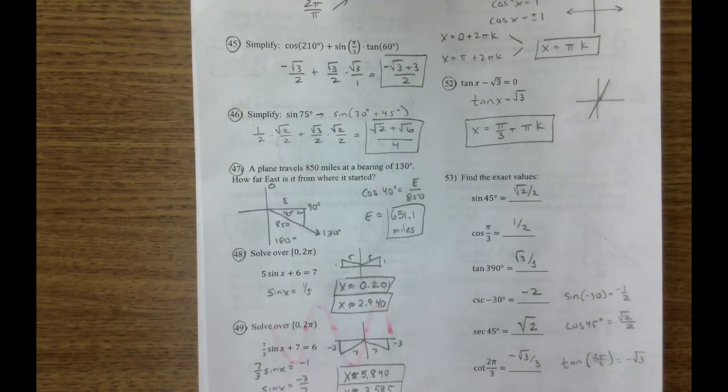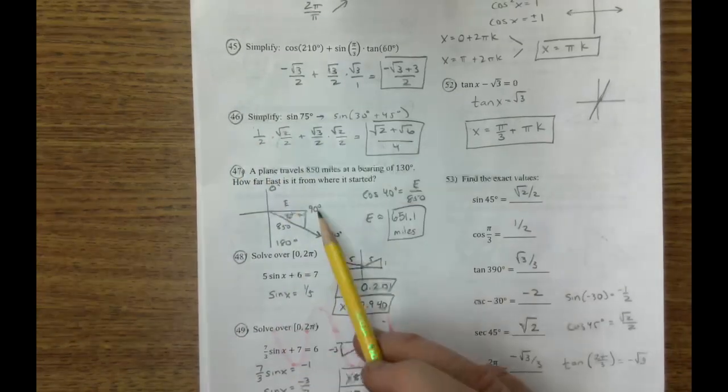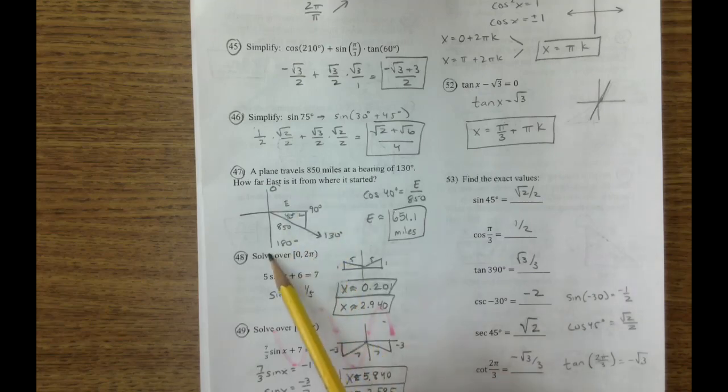On all your bearing problems, number 47, you're going to make sure you write this out. This is 0 degrees at the top. Then it's 90, 180. Usually, we start 0 over here for the unit circle, but on a bearing problem, we go 0, 90, 180. If you draw your triangle, you can write it cosine.